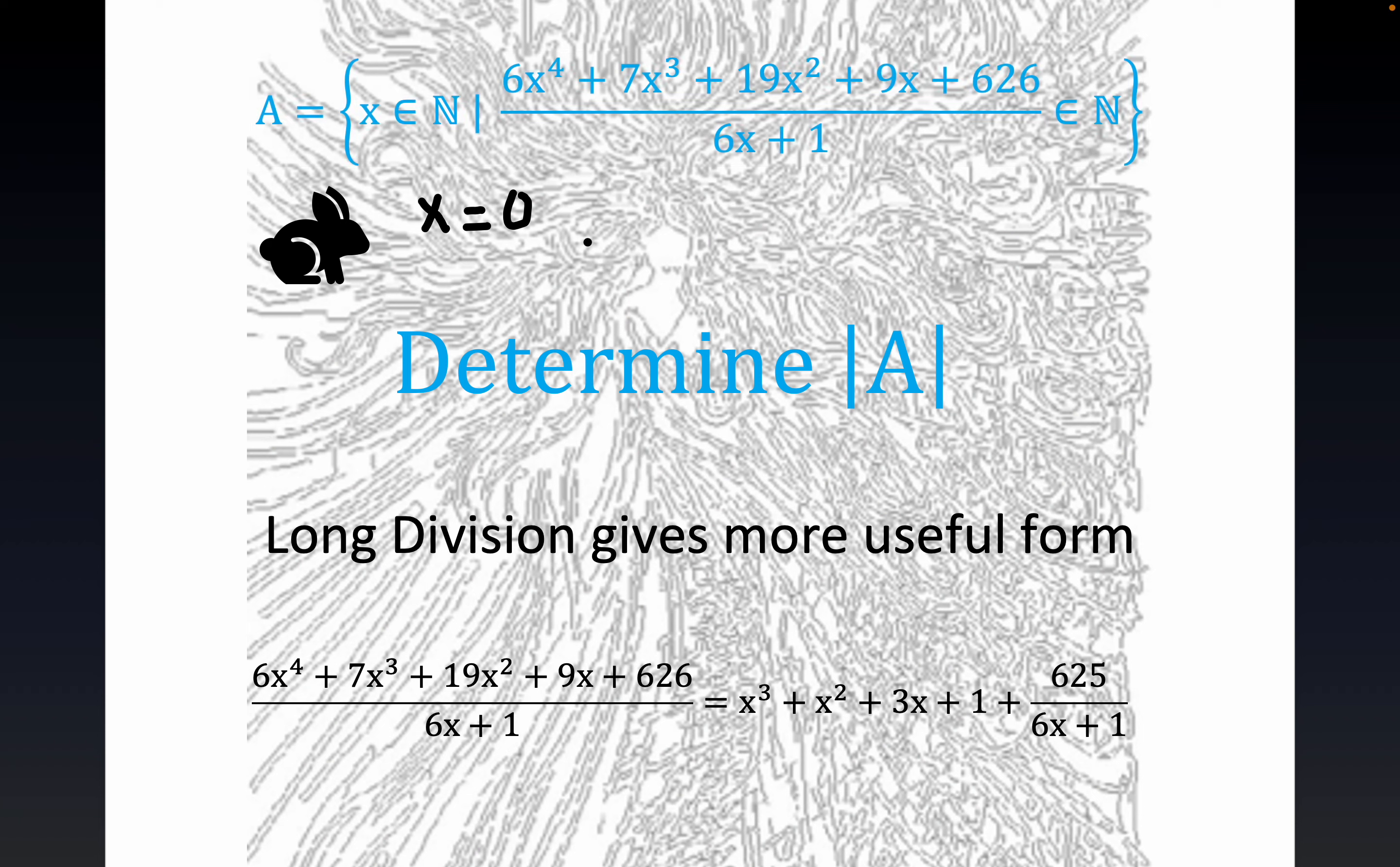Now you can clearly see that x equals zero is a member of A. We'll write this membership notation here. It's a member of this set A, since if you put zero here, here, here, here, and here, you end up with 626 over 1. So this is the so-called trivial case. 626 over 1 is certainly a natural number, right? It's a member of the natural numbers.